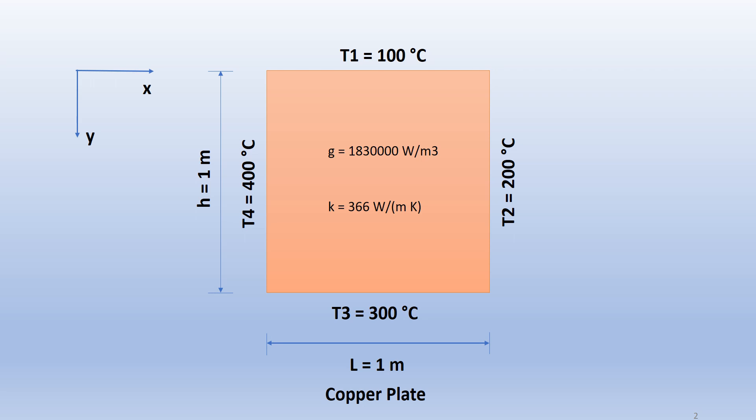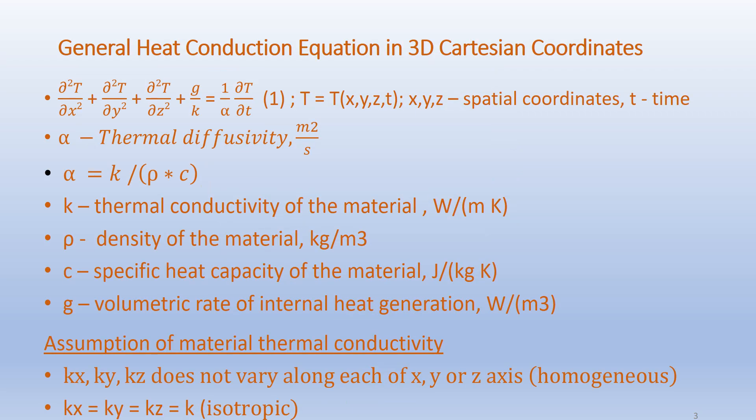The thermal conductivity K equals 366 watts per meter Kelvin. The X and Y coordinates are shown on the left hand side. Going back to our general heat conduction equation in 3D Cartesian coordinates, we have: ∂²T/∂x² + ∂²T/∂y² + ∂²T/∂z² + G/K = (1/α)(∂T/∂t).